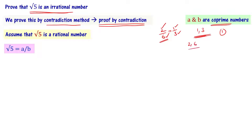2 and 6 have common factors 1 and 2, whereas 1 and 3 have only 1 as their common factor, so 1 and 3 are co-prime numbers. Similarly, a and b are co-prime numbers. It is very important to note this — co-prime numbers have only number 1 as the common factor and no other common factor.